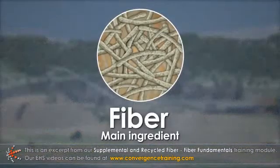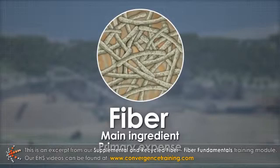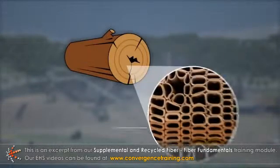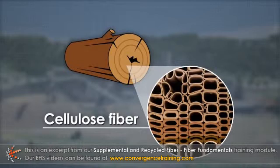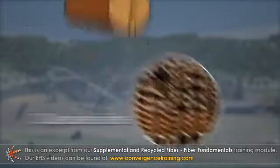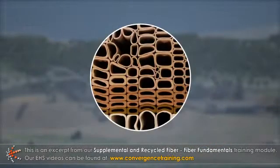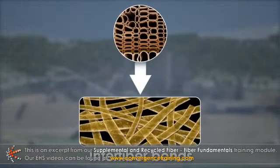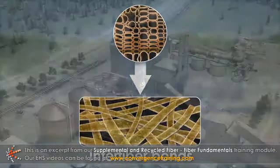Fiber is the main ingredient and primary expense in the manufacture of paper and board products. Cellulose fiber from wood is the predominant fiber type used because it is widely available and has the ability to form interfiber bonds.